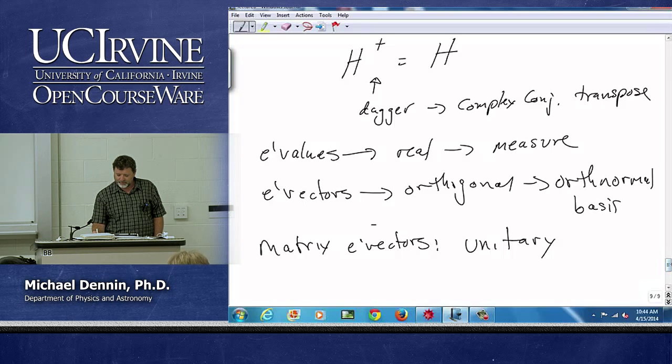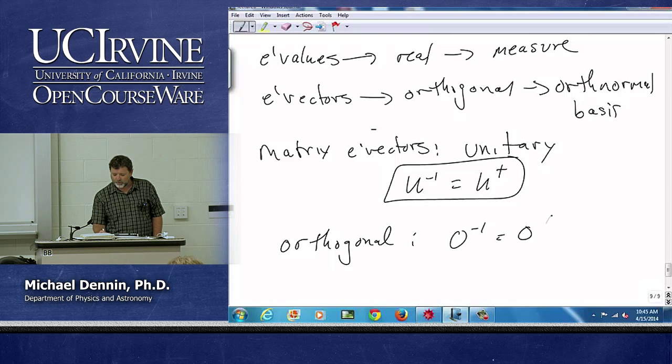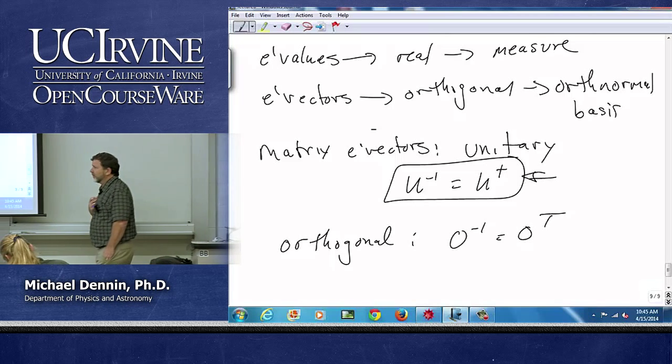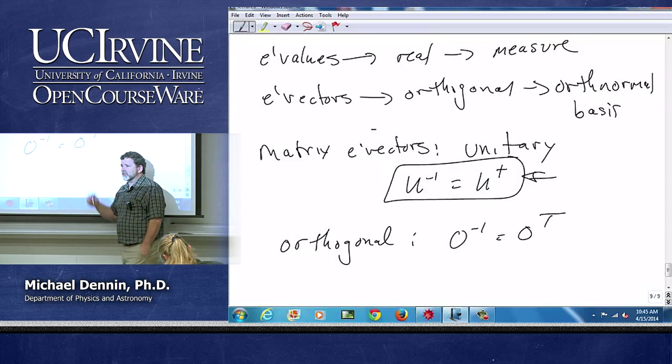Which means that U inverse equals U dagger. Notice if everything is real then we have the case of things being orthogonal. O inverse equals just O transpose. You need the dagger because there's often complex numbers floating around in quantum mechanics so you got to do the complex conjugate transpose as opposed to just the transpose.